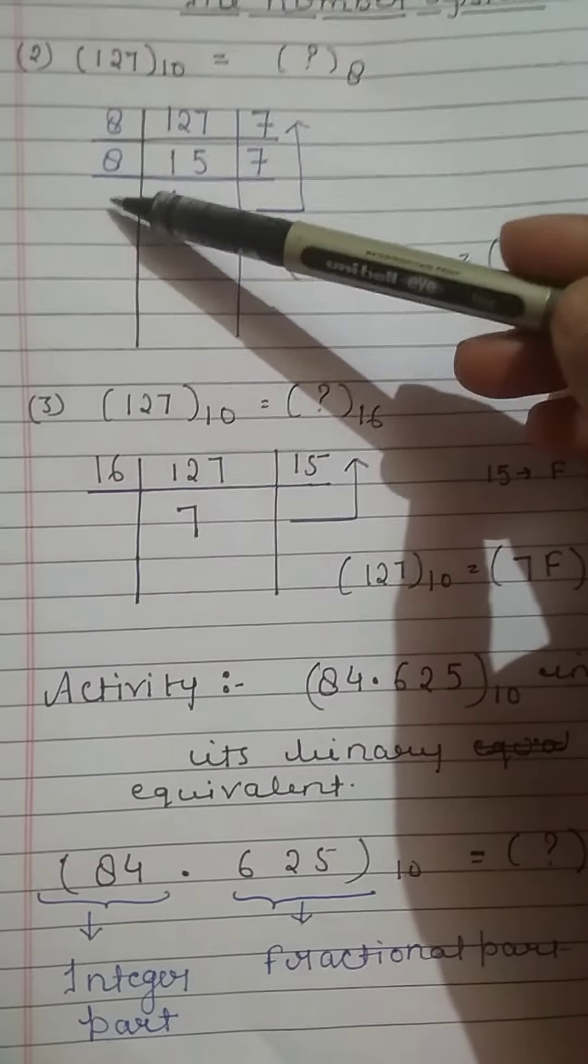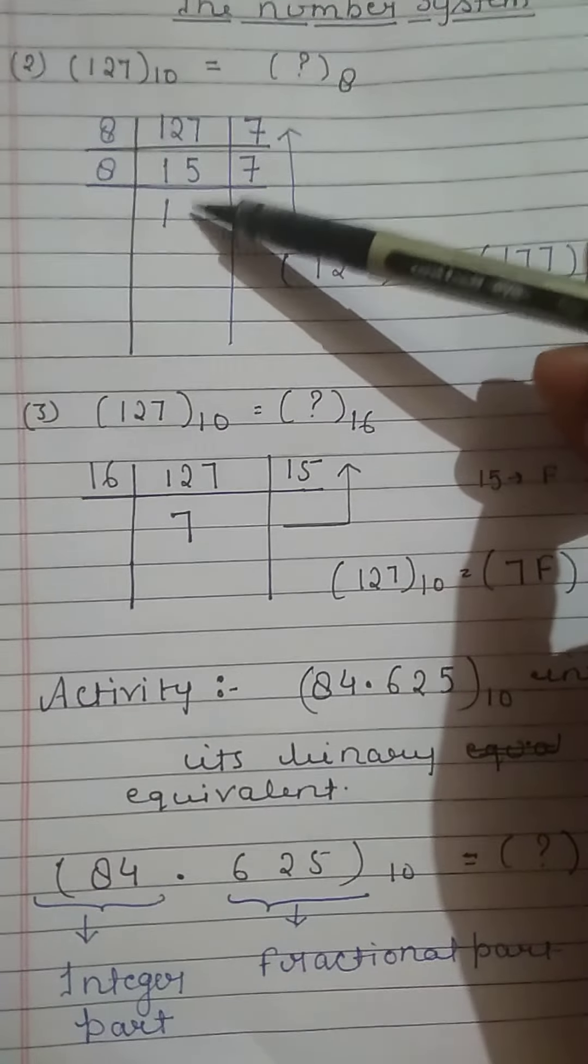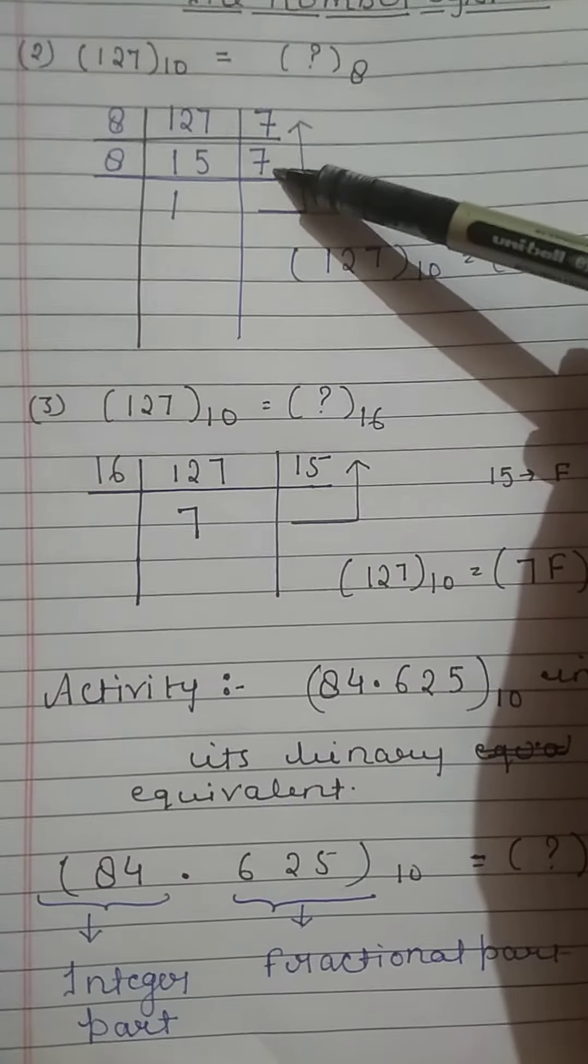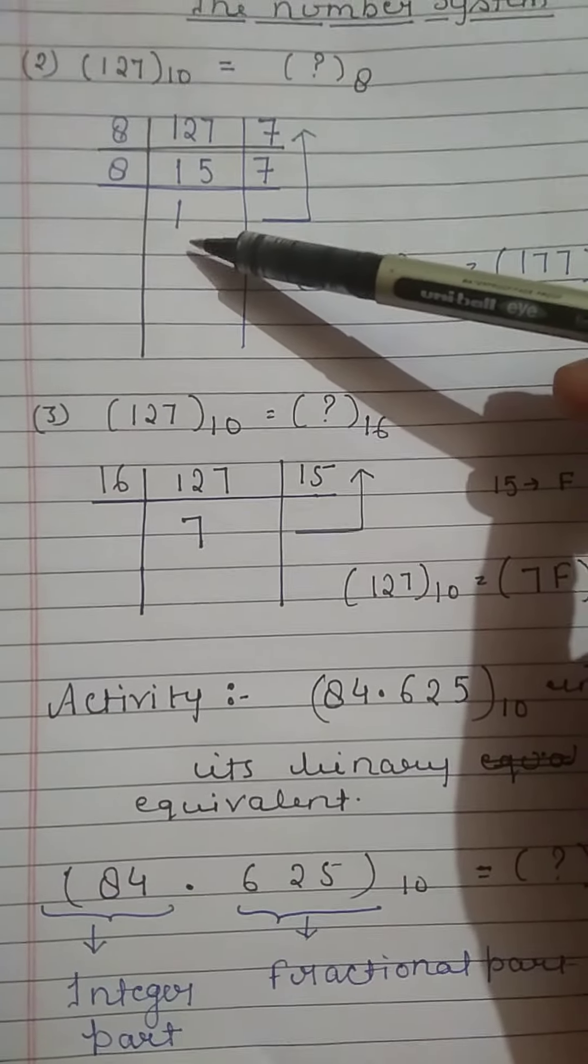We will again divide 15 by 8. You will get quotient 1 and remainder 7. We do the division until we get 0 or 1.